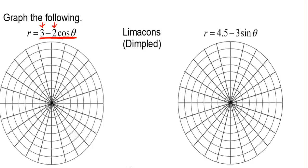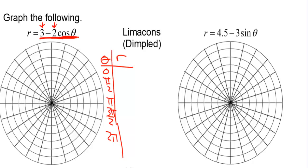For r equals 3 minus 2 cosine theta, theta and r: 0, pi over 2, pi, 3 pi over 2, 2 pi. Cosine of 0 is 1, so 3 minus 2 is 1. Pi over 2: cosine is 0, so r is 3. Cosine of pi is negative 1, so r is 5. At 3 pi over 2, cosine is 0, so r is 3. At 2 pi, r is 1. Plotting: at 0, r is 1; at pi over 2, r is 3; at pi, r is 5; at 3 pi over 2, r is 3; back to 1. Because this is not 4 or more, it's going to be a dimpled limaçon. Starting at the widest point, looping around, dimpling to that nearest point, coming around — there is a dimpled limaçon. The wide end is along the x-axis because it's cosine.